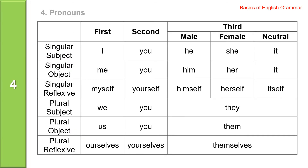Now you see a chart of personal pronouns. There are three persons: first, second, and third. And then there are singular and plural, and subject pronouns.